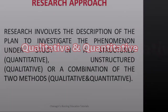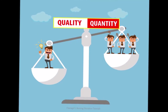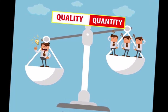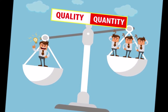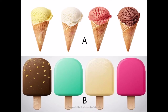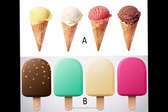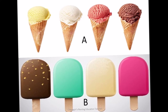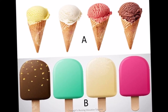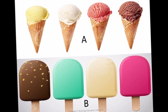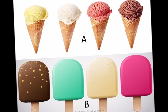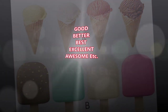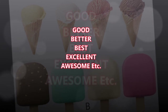Qualitative is expressive in nature whereas Quantitative is measurable in nature. For example, here we can take ice creams of two different brands, A and B. If the question is asked which brand is good, the answer may be A is better than B. So the quality can be expressed in terms of good, better, best, excellent, awesome, etc.